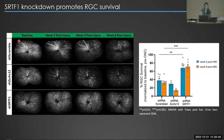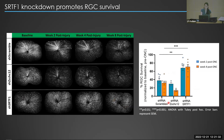From my initial shRNA injection experiments, these are representative in vivo images at baseline and at different time points. When I inject SH scramble control, over time we see significant loss of retinal ganglion cells. Similarly, with injection of SH-ZCCHC12, we also see significant RGC loss. However, when I knock down SRTF1, I can see that there is some sustained cell survival. The quantification shows significant cell survival in the SH-SRTF1 group compared to SH scramble controls.